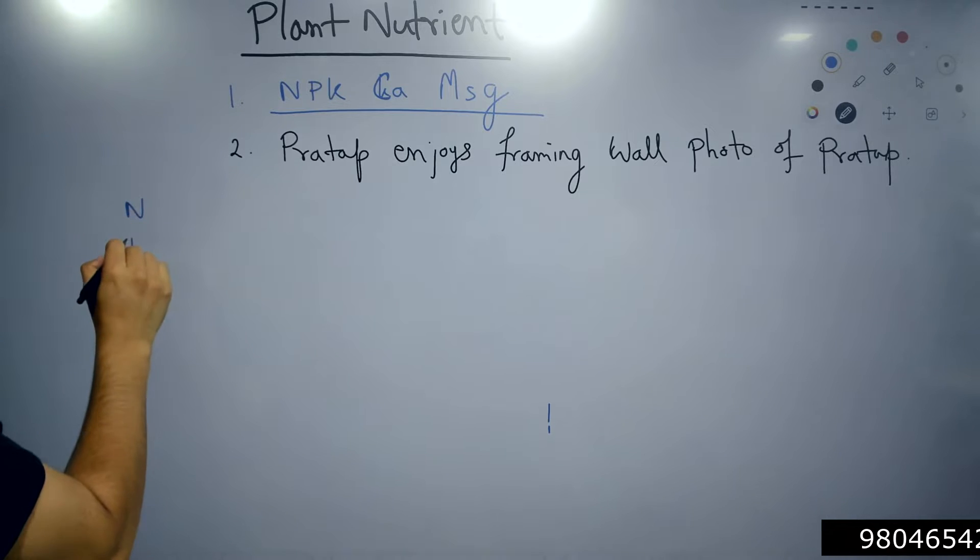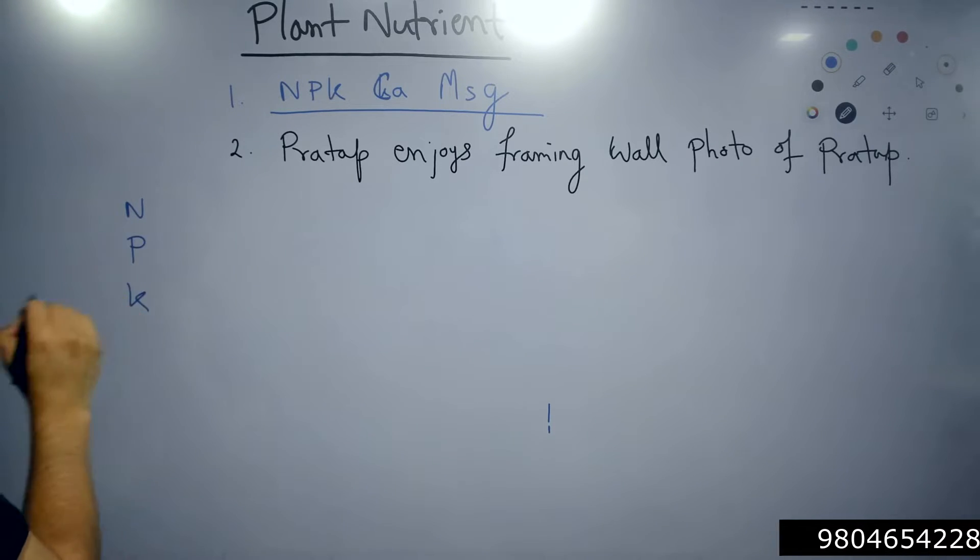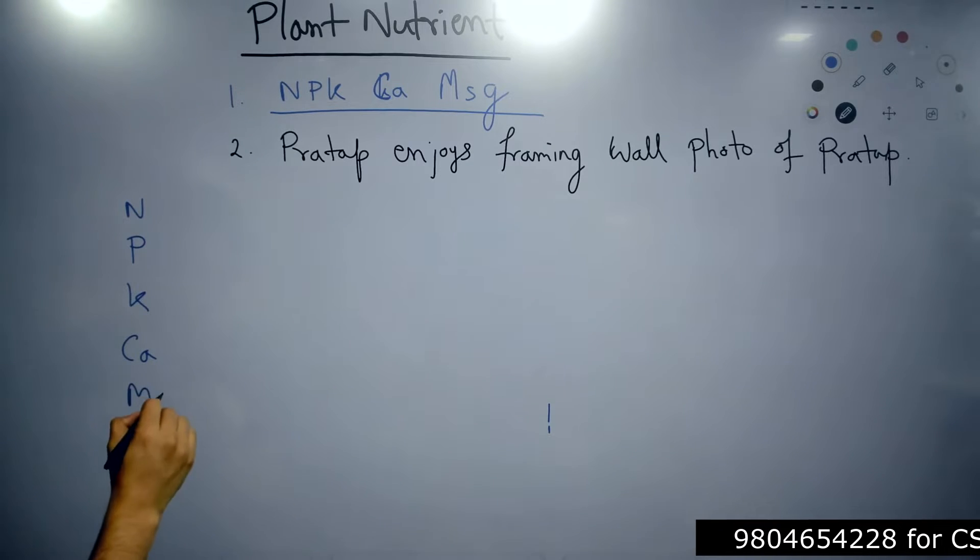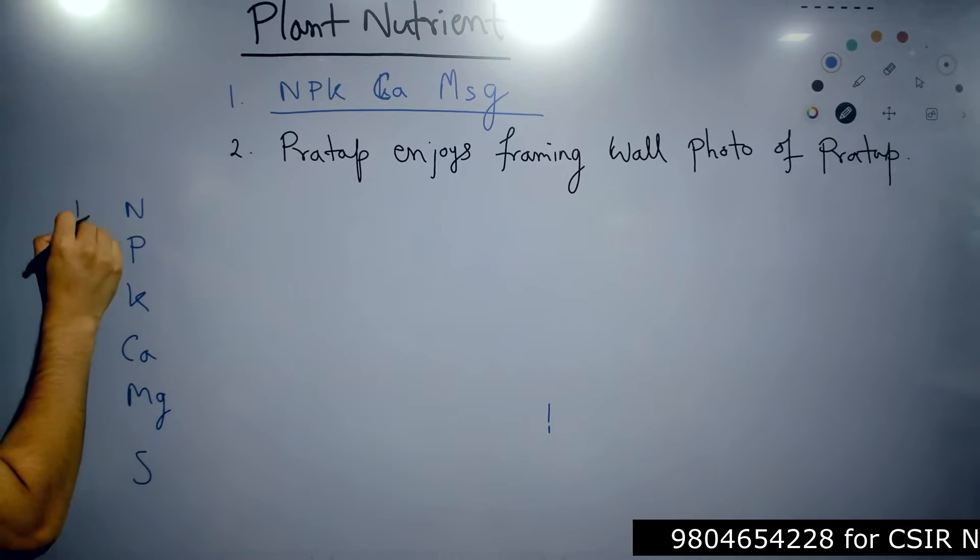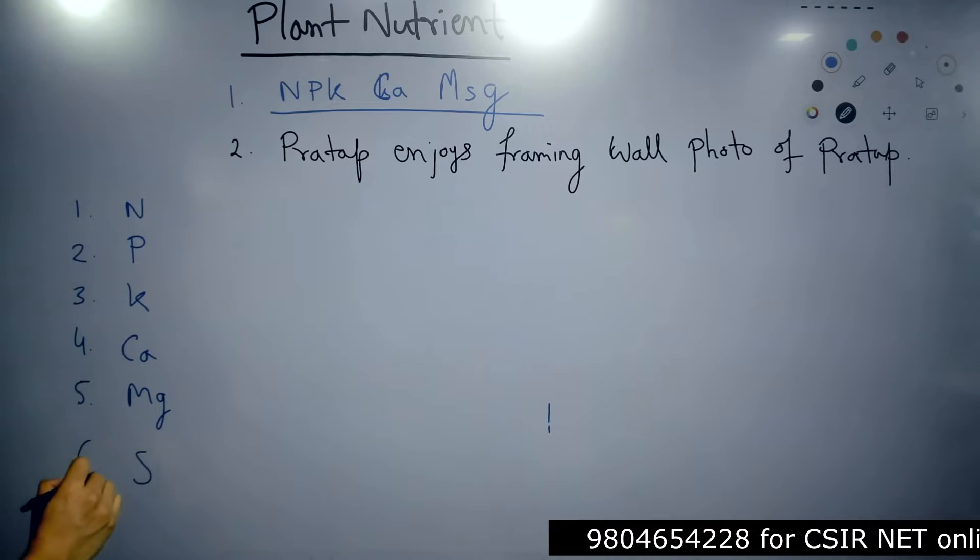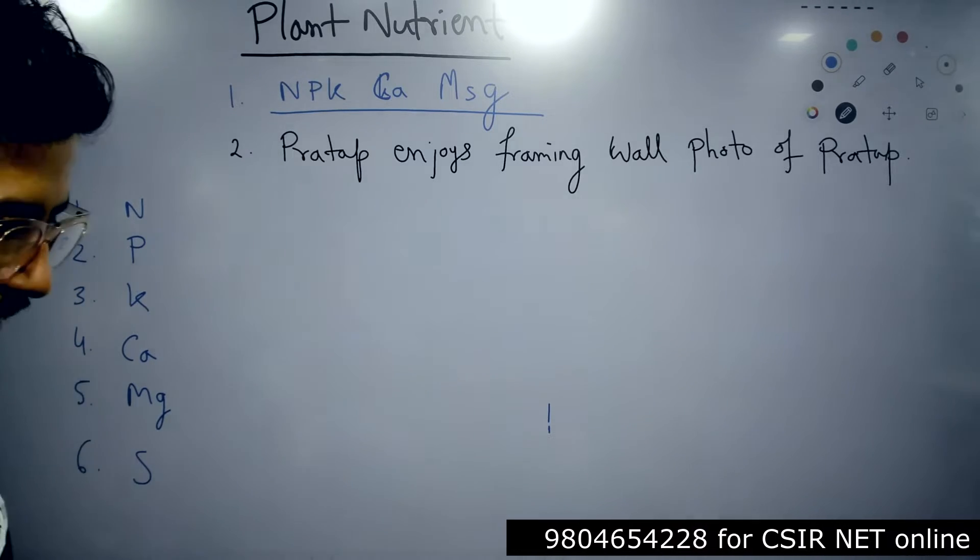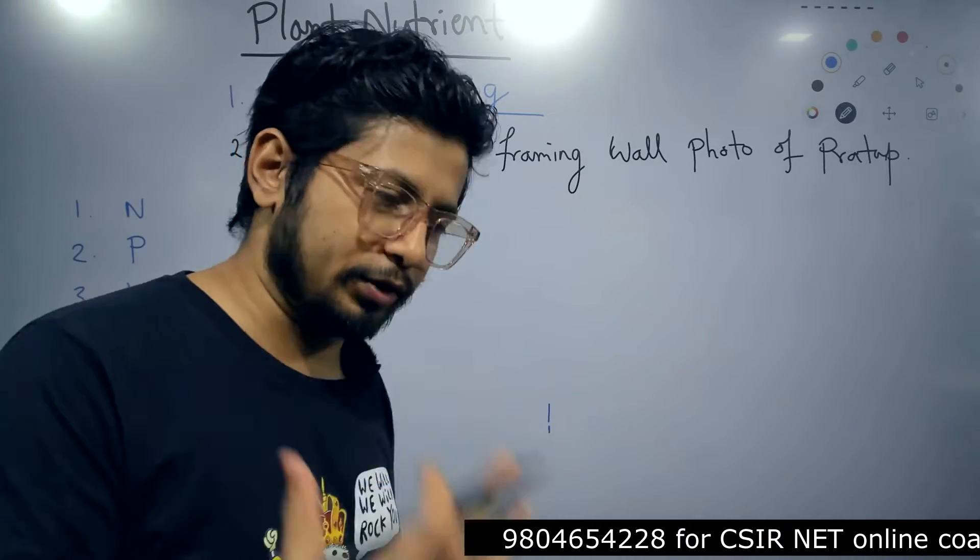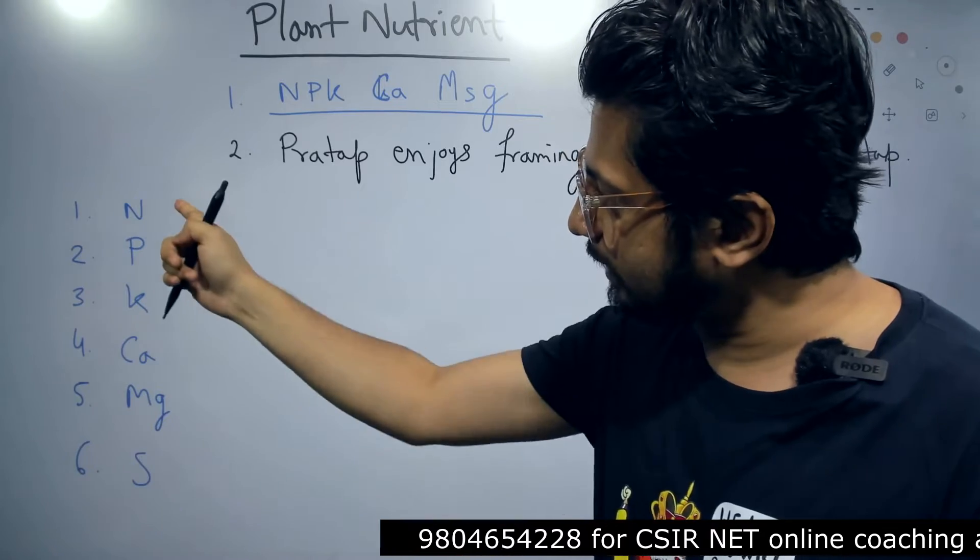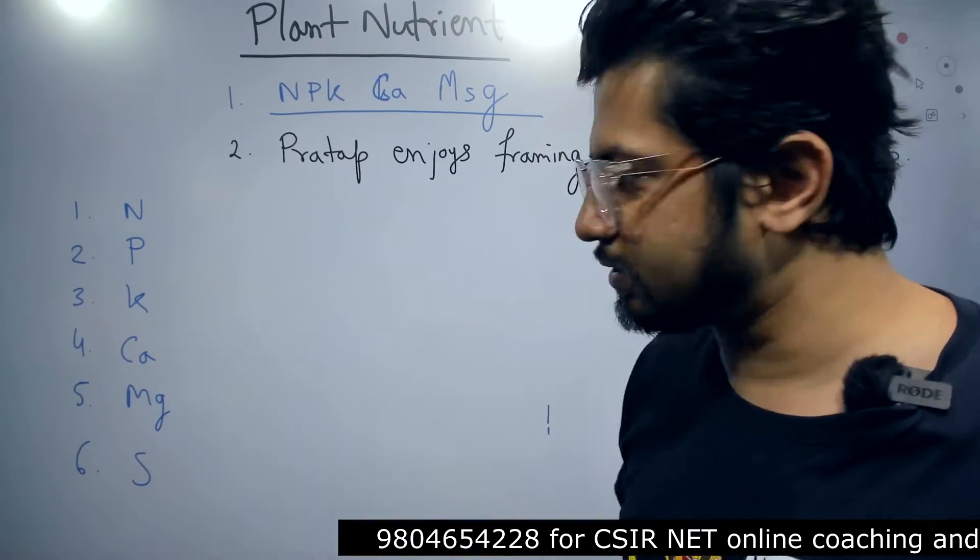Let me write it out: N for nitrogen, P for phosphorus, K for potassium. Apart from that, ka - calcium, and message - Mg for magnesium, S for sulfur. So these are 1, 2, 3, 4, 5, 6. Six macronutrients, major nutrients for plant nutrition. The list is given for you: NPK ka message. You know NPK, calcium, magnesium, sulfur. That's it.